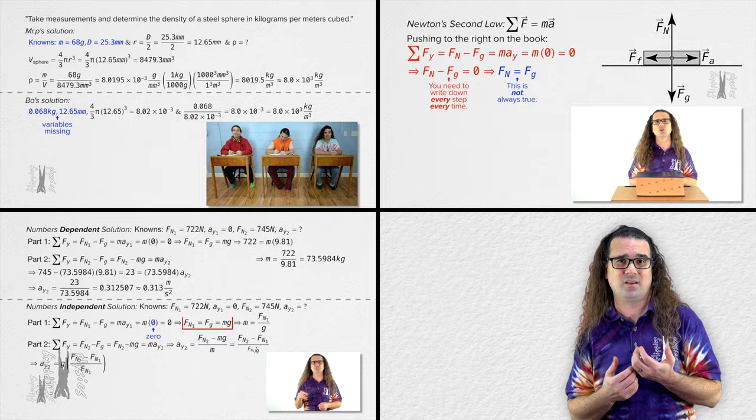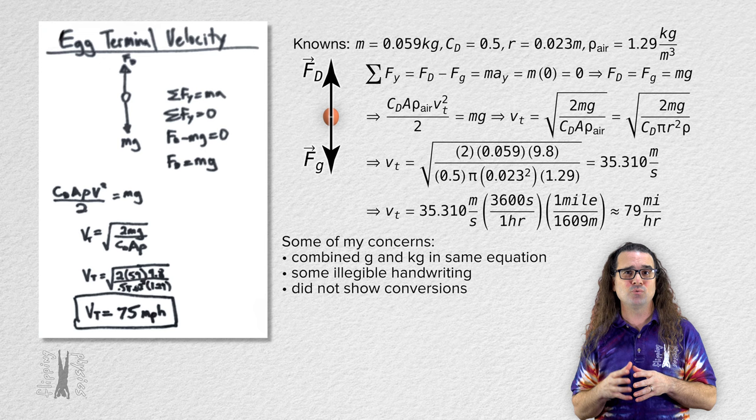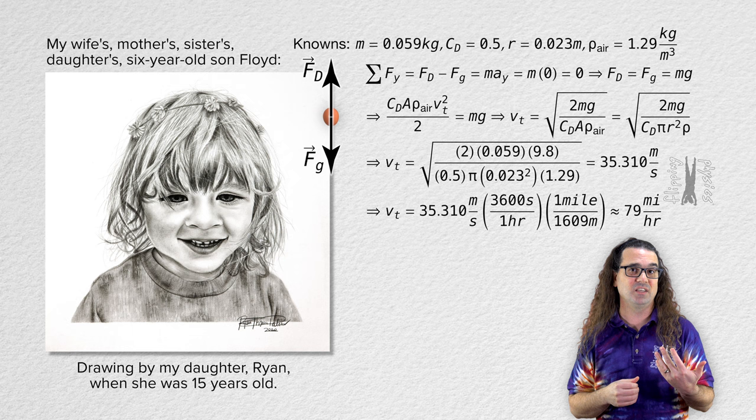At one point, I remember hearing you say you wanted to be a physics teacher. In some ways, you currently are. You have many fans who learn from you, including my wife's mother's sister's daughter's six-year-old son, Floyd. Seen here in a drawing my daughter Ryan did two years ago when Ryan was 15 years old. This kid here, Floyd, is definitely a Mark Rober superfan.